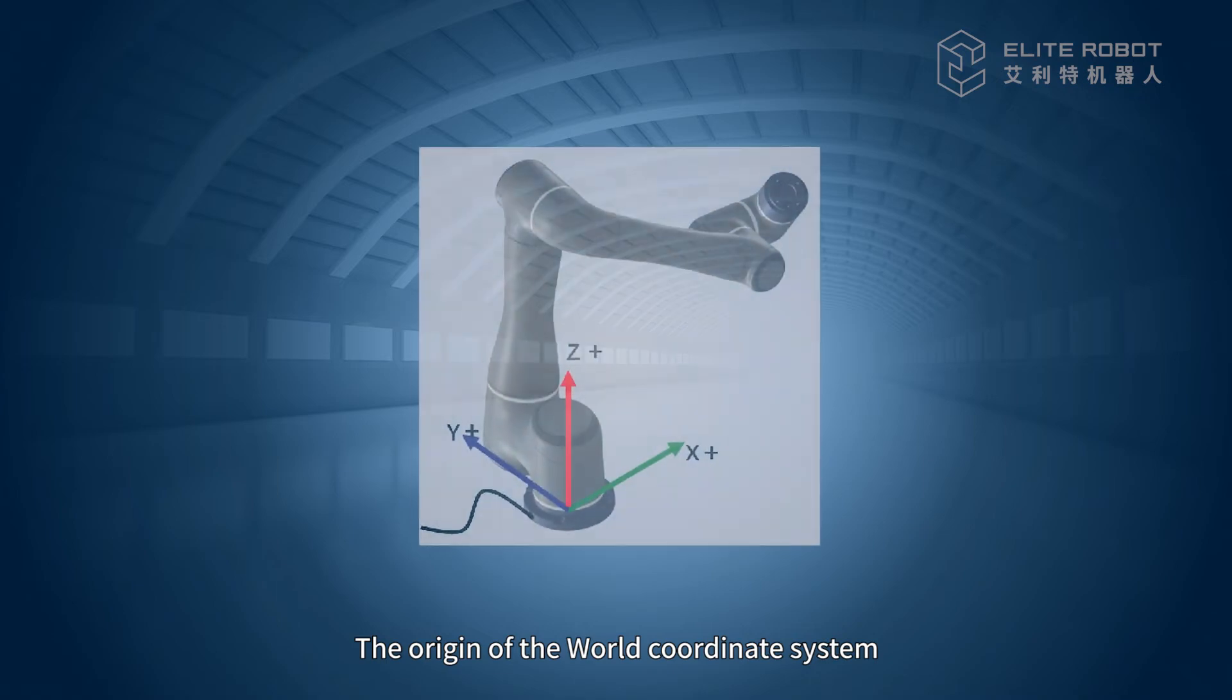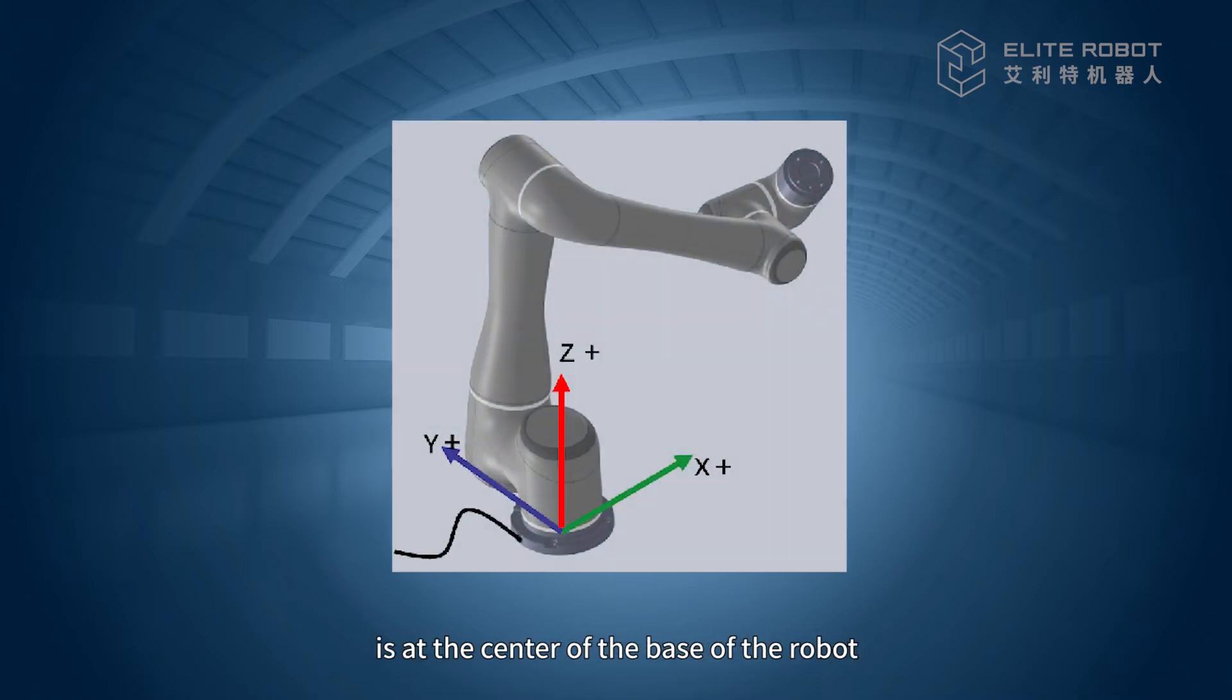The origin of the world coordinate system is at the center of the base of the robot, with the positive x-direction being opposite that of the power cable, with the z-direction going right above that. And the y-direction can be determined by the right-hand rule.